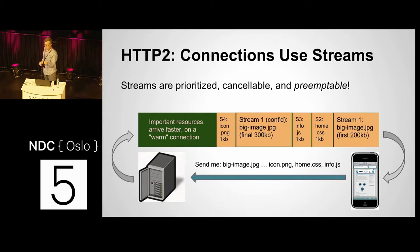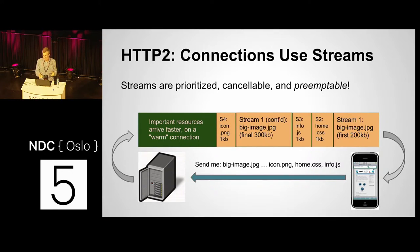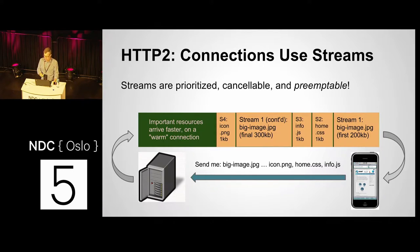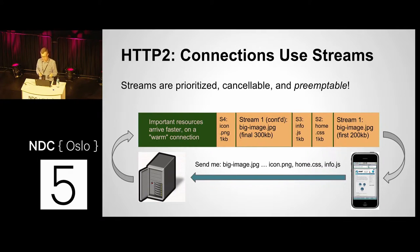With H2, it's actually possible to stop in the middle. Even though the browser started asking for bigimage.jpg, it later decided it would rather have CSS and JS files, because it doesn't want to do its initial render until it gets those render-blocking resources. With an H2 connection, the server can say: wait, if you need these things more, I'll stop sending the JPEG and send you these more important resources instead, then come back to the big image. That's an extremely valuable thing to be able to do.